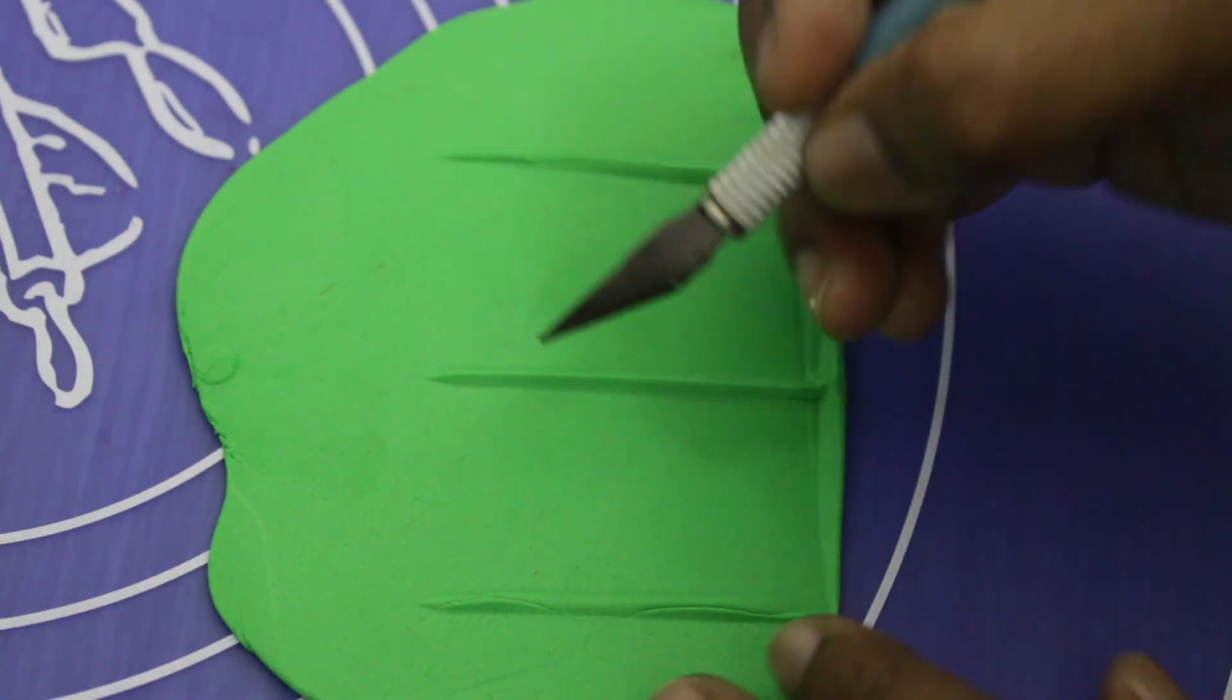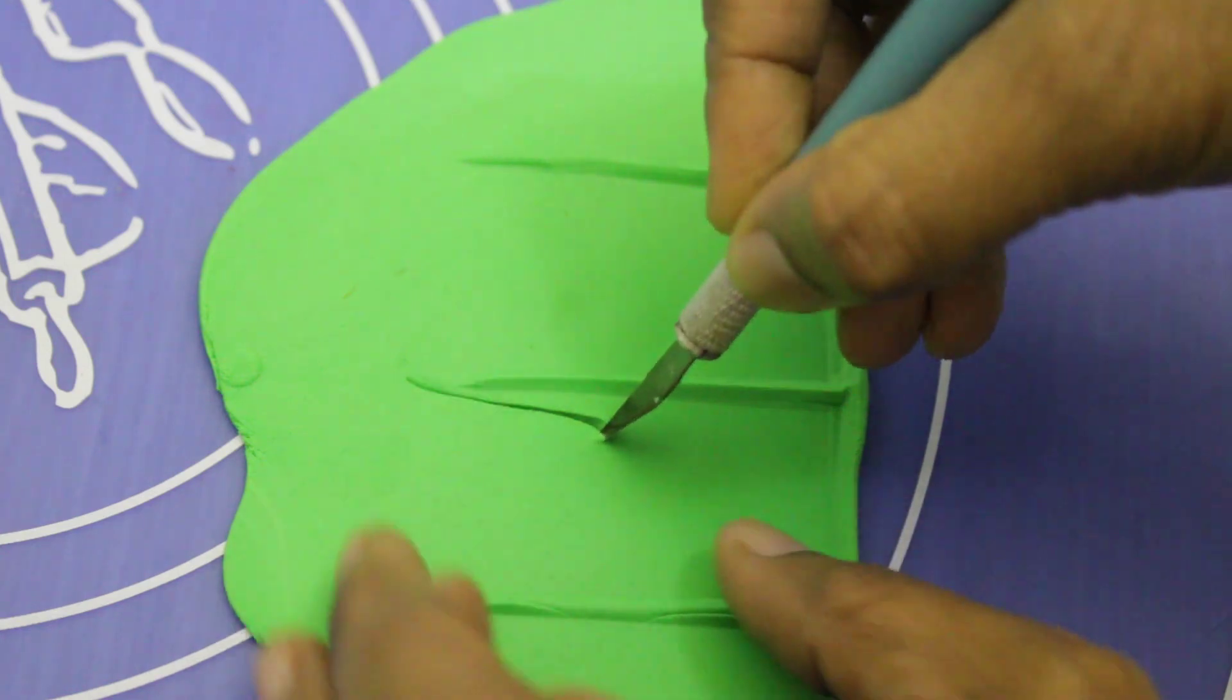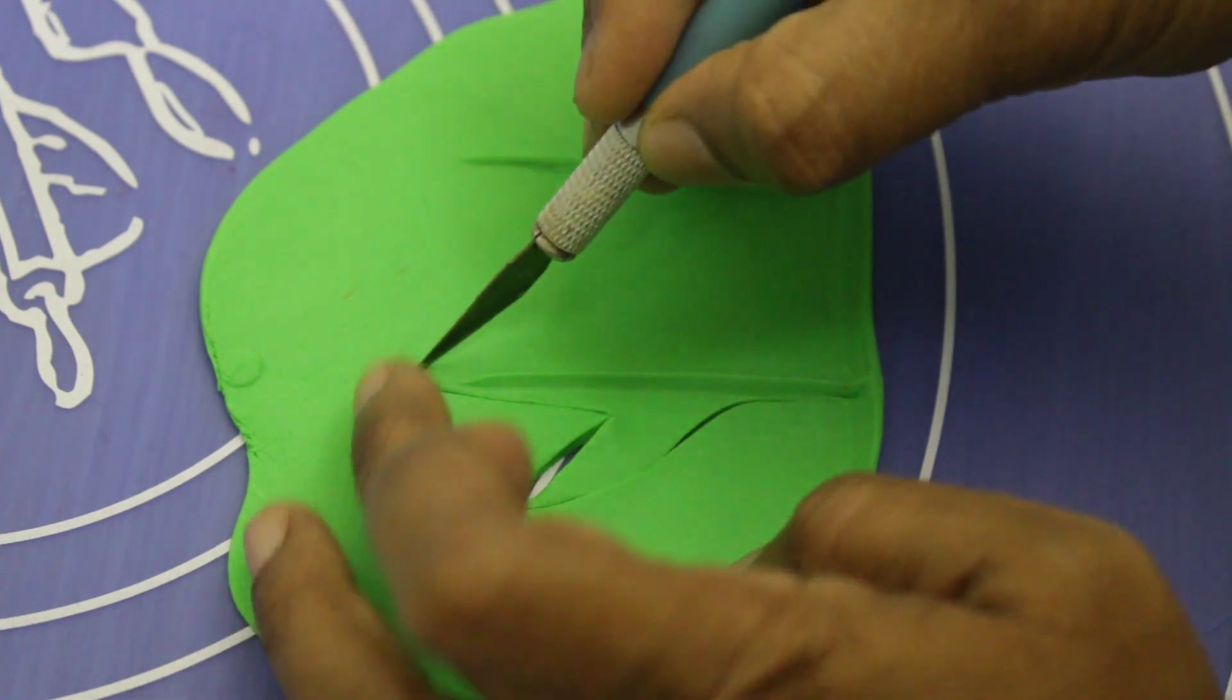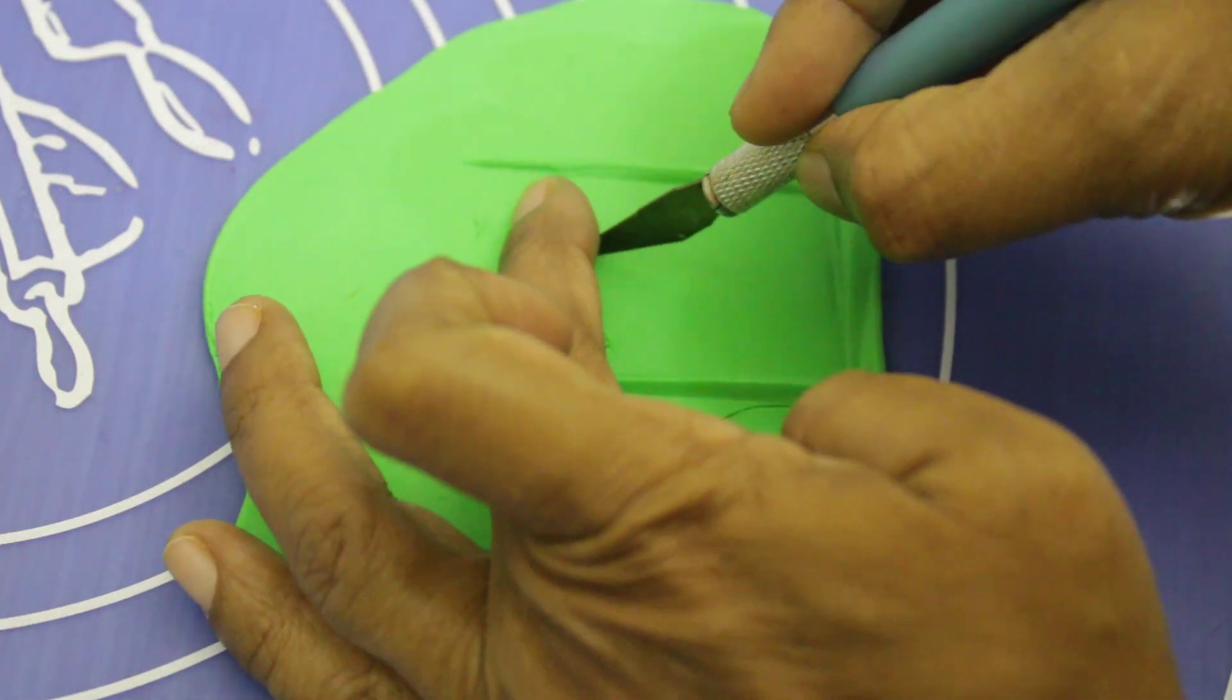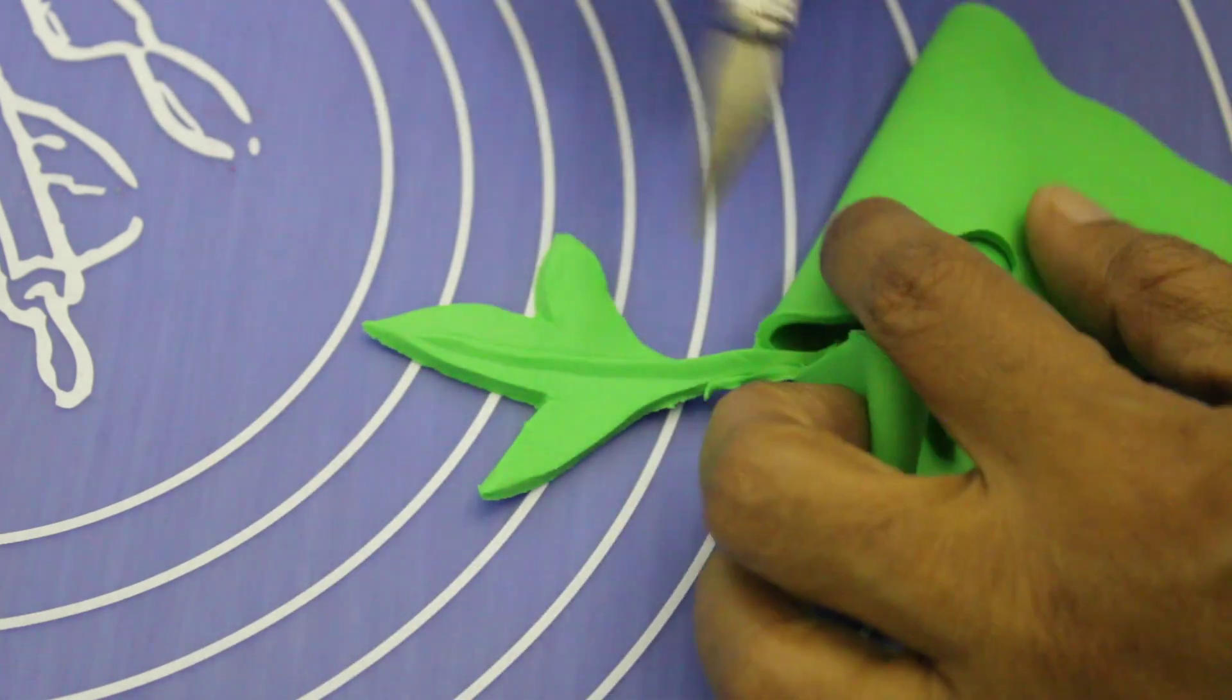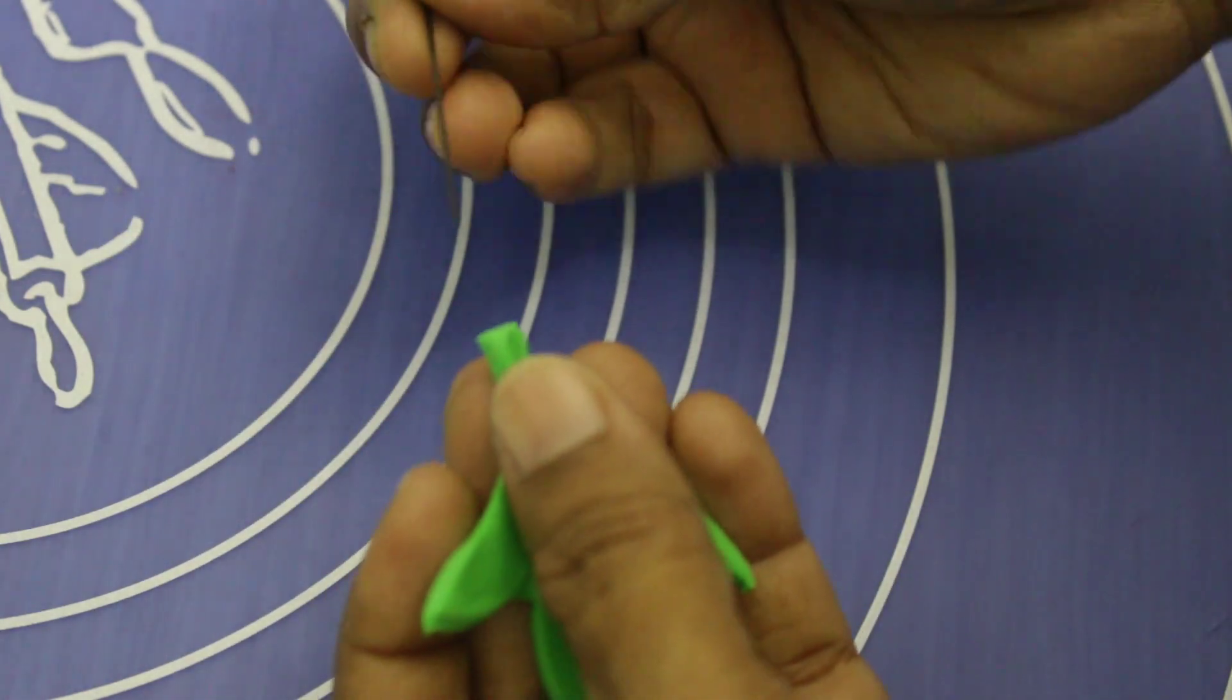So I am making that leaf by hand because I don't have that cutter. So it is like this and then here. The same way, cut it here, push it inside.